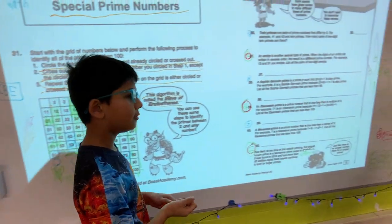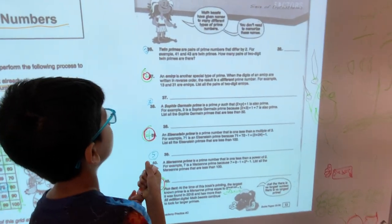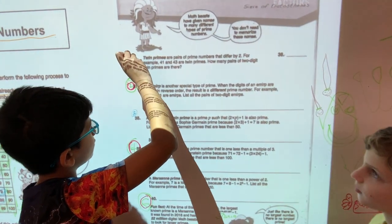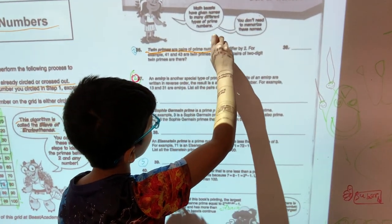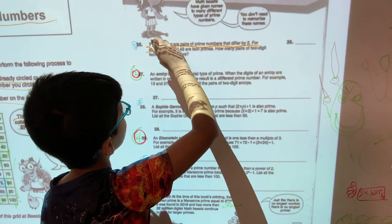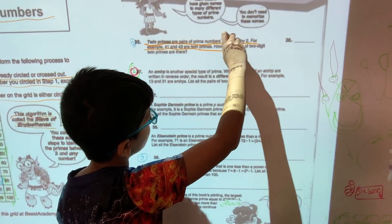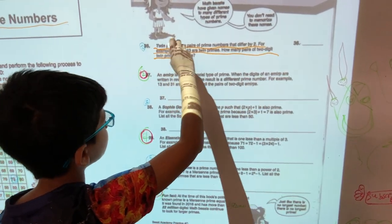Now we will solve problems with these. First, I'm going to solve twin primes. Twin primes are pairs of prime numbers that differ by two. For example, forty-one and forty-three are twin primes. How many pairs of two-digit twin primes are there?